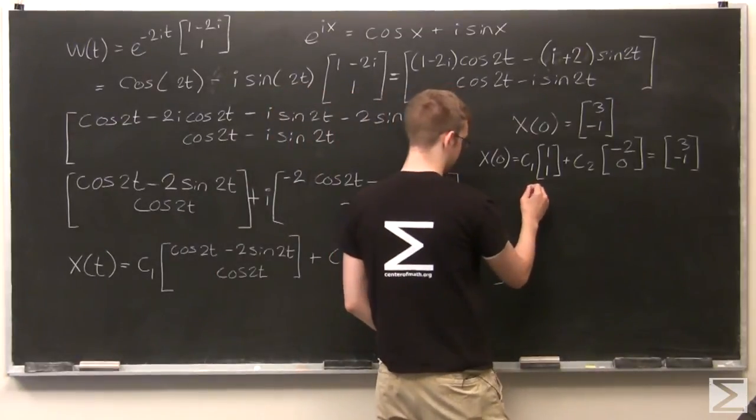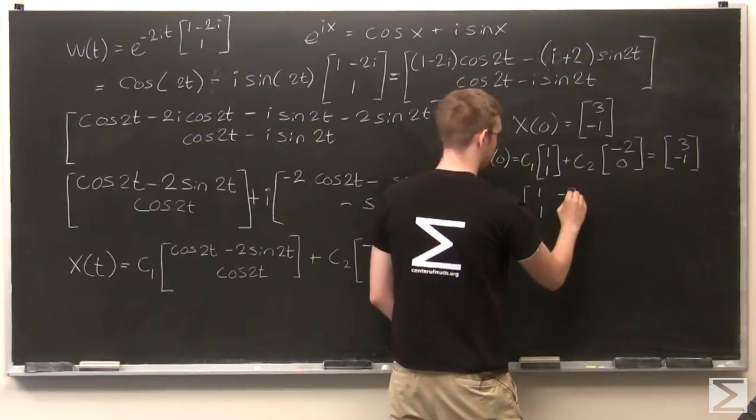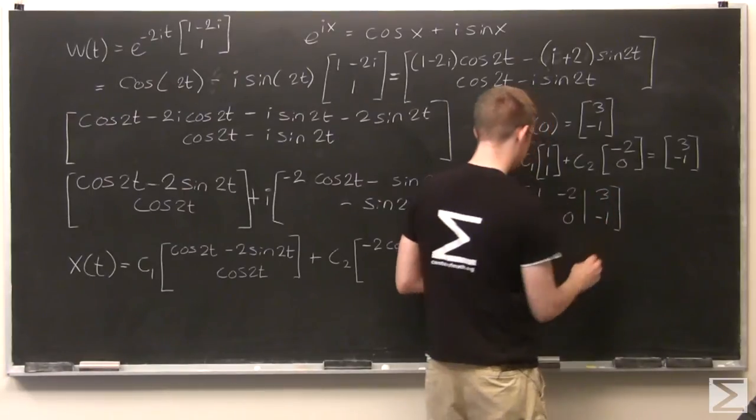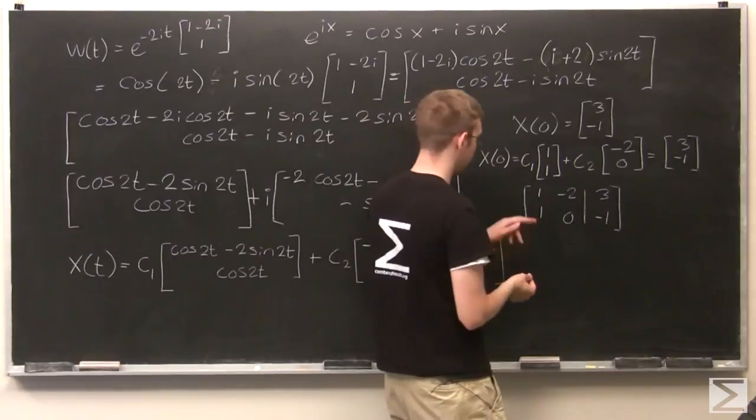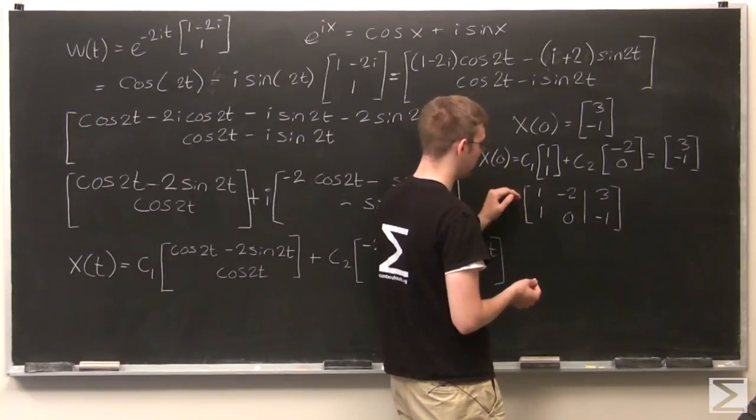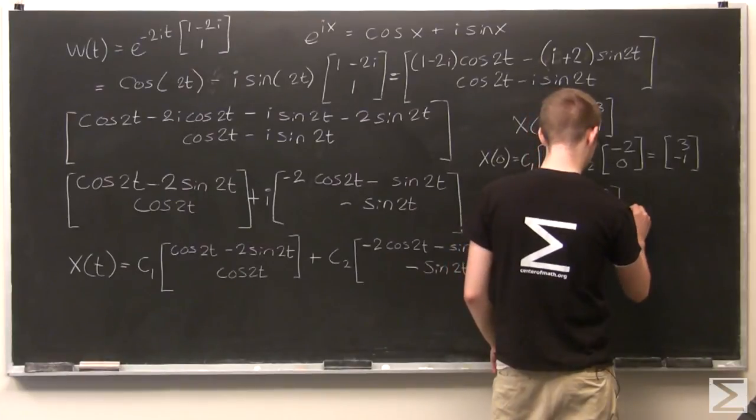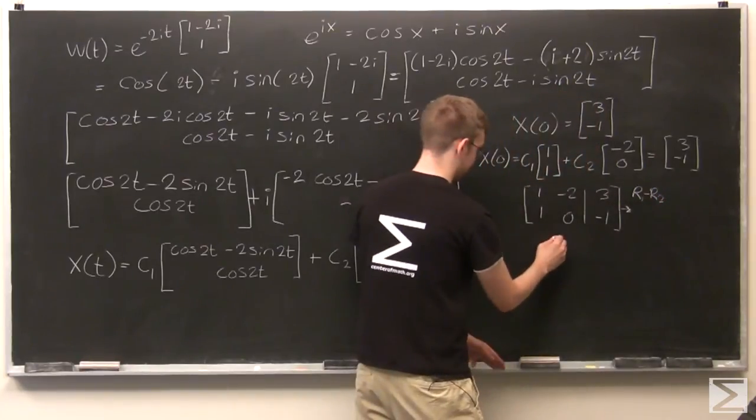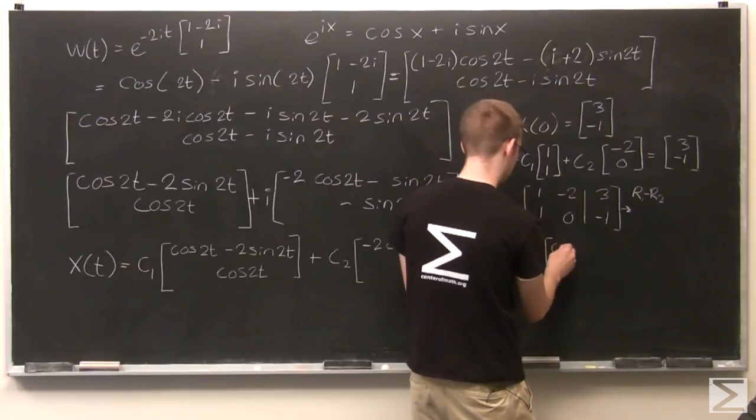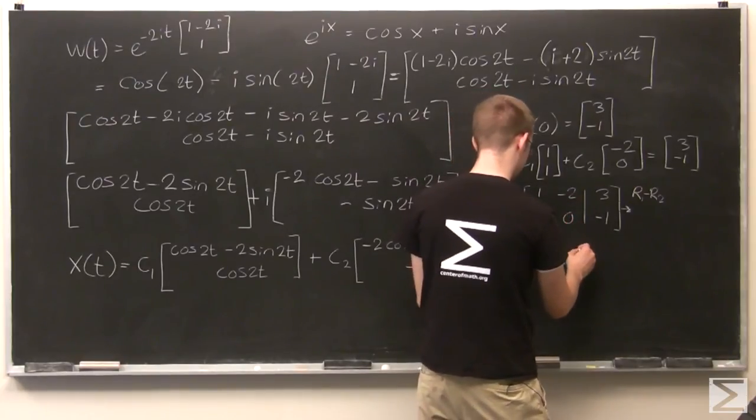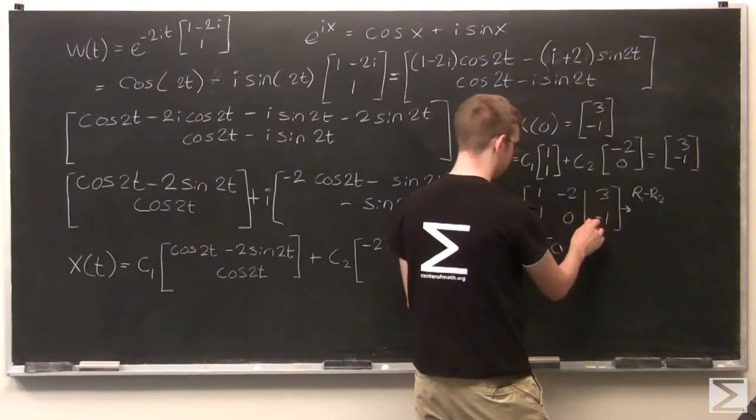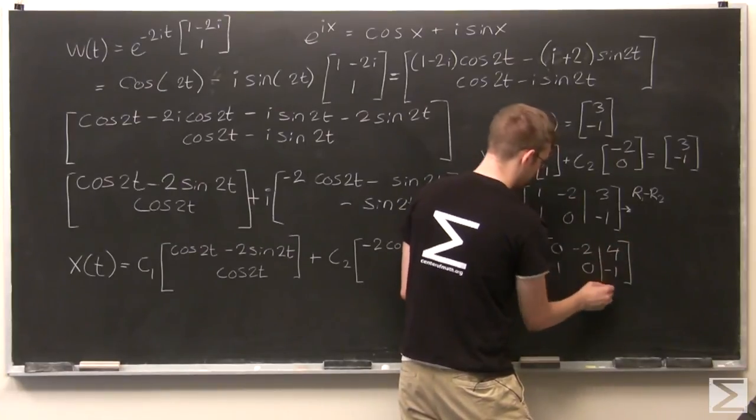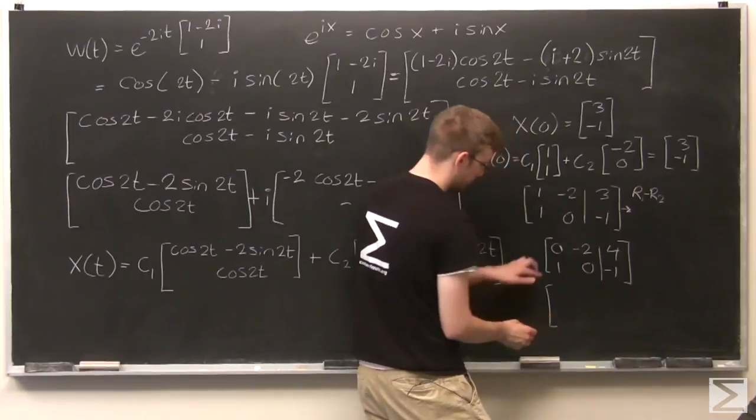We have [1, 1; -2, 0] and [3, -1]. Okay, I'm going to go row 1 minus row 2, right? I need to write it down here. 1 minus 1 is 0, -2 minus 0 is -2, 3 minus -1 is 4. And [1, 0, -1]. Just do a little bit of rearranging. I need to switch these rows, and this gets multiplied by -1/2.